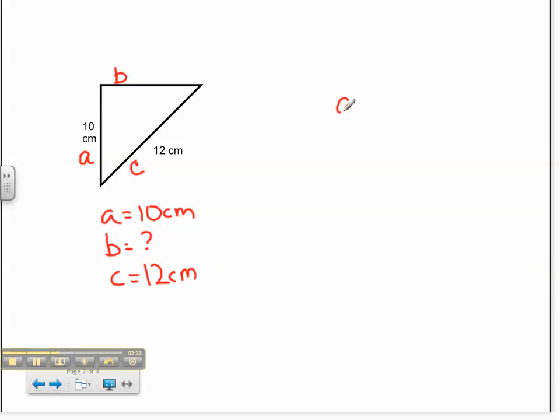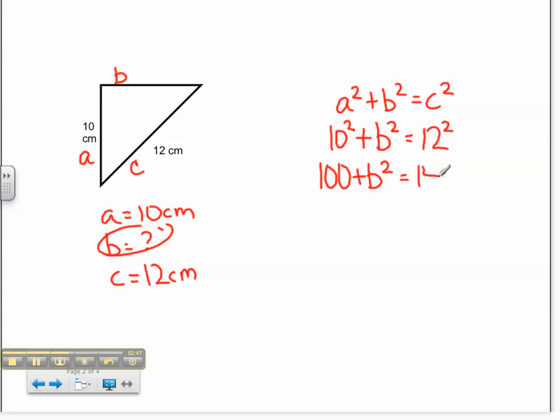As I start the problem, I will once again rewrite my formula before I begin. In this problem, I will substitute a with 10, so I have 10 squared, plus b. We don't know what b is, so we will leave it b squared, and c is 12 centimeters, so we'll write 12 squared. I'm going to compute my squares. I have 100 plus b squared equals 144.